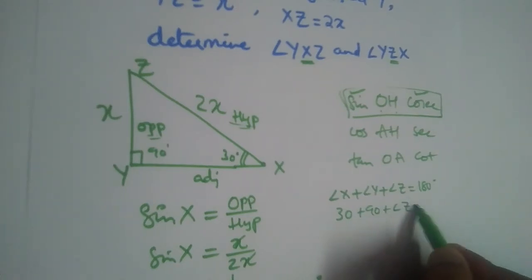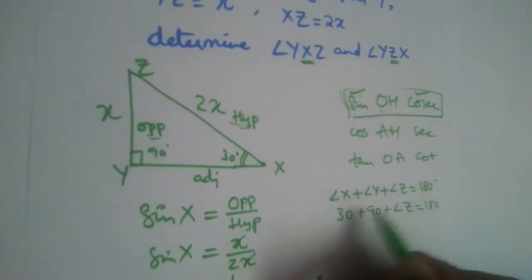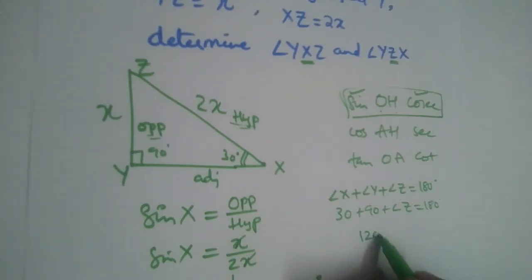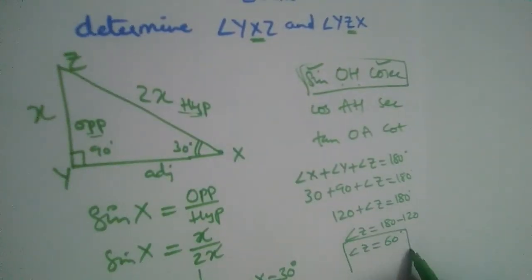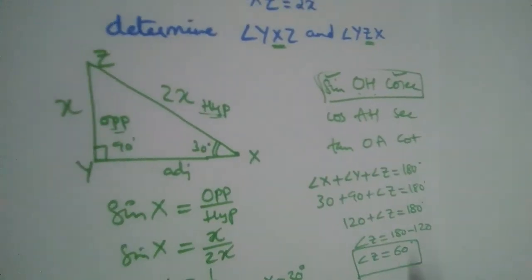Can we find that? 90 and 30, 120, angle Z, 180, right? So angle Z will be 180 minus 120. It will be equal to 60 degrees. So angle Z is 60 degrees. Okay.